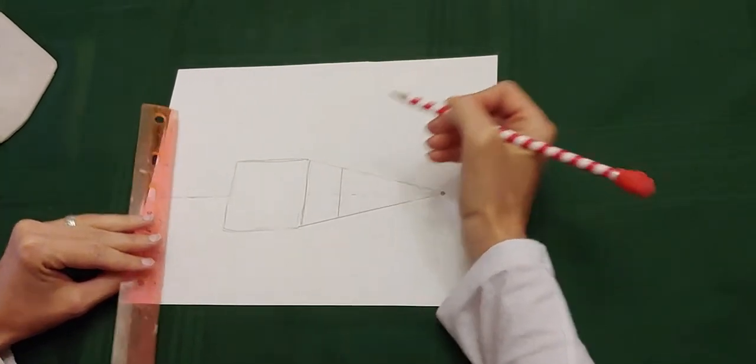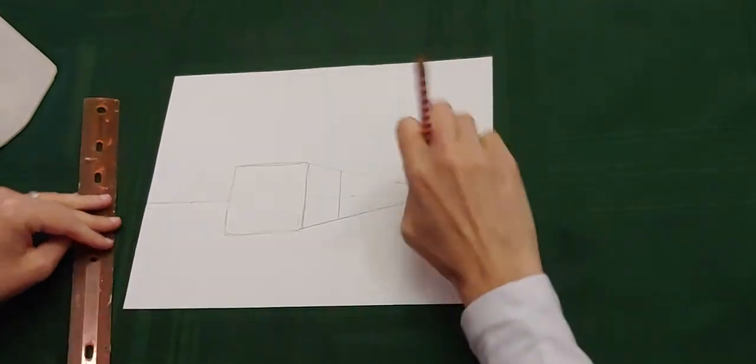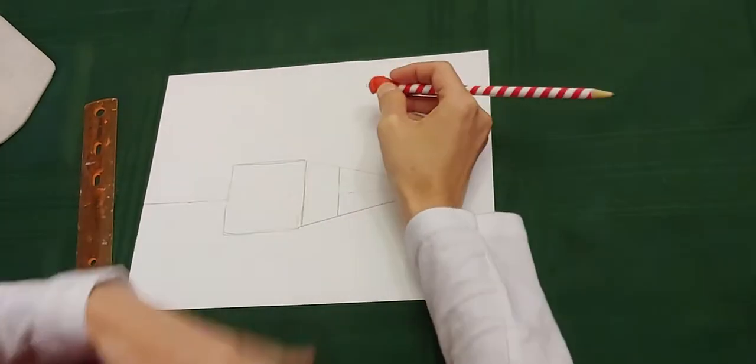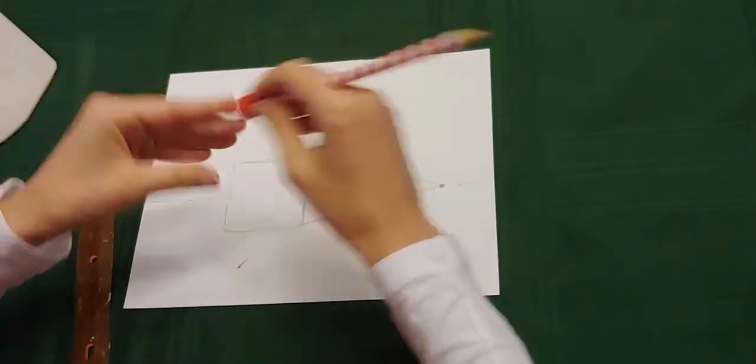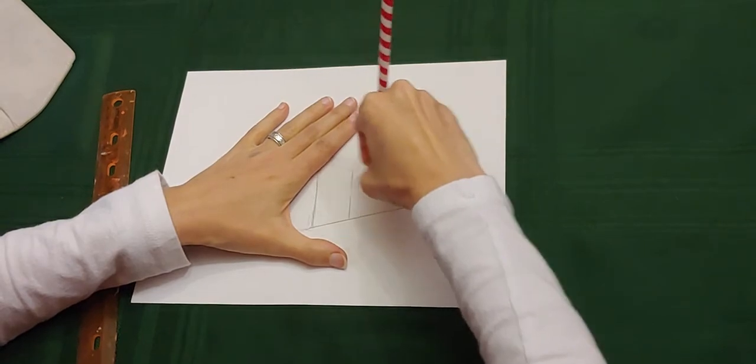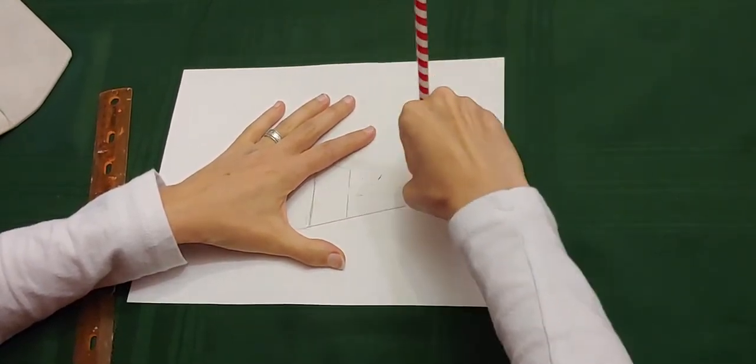And again, this is going to be in front of the horizon line, so you don't need to have the horizon line shown. And from here on out you can erase your lines, your diagonal lines, and you have a three-dimensional cube shape.